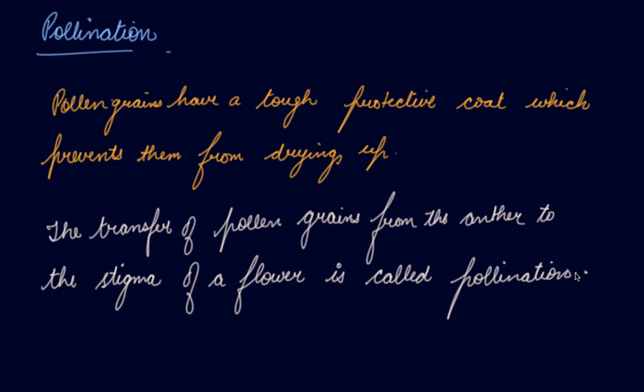Now, if the pollen grains land on the stigma of the same flower, it is called self-pollination. Whereas when the pollen grains of a flower land on the stigma of another flower of the same plant, it is known as cross-pollination.